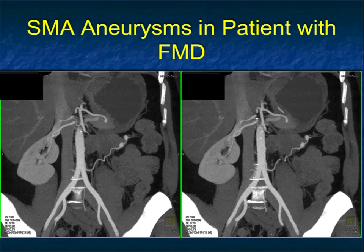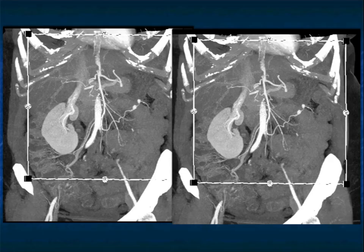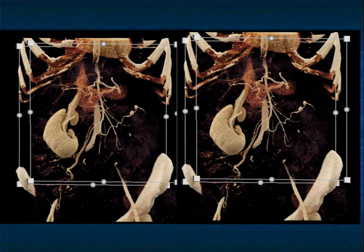It's important to remember, and we do see a lot of it. Here's a patient with multiple SMA branch aneurysms in a patient with fibromuscular dysplasia, nicely shown either on volume rendering, MIP imaging, or cinematic rendering — on all of these, you can see it very nicely.